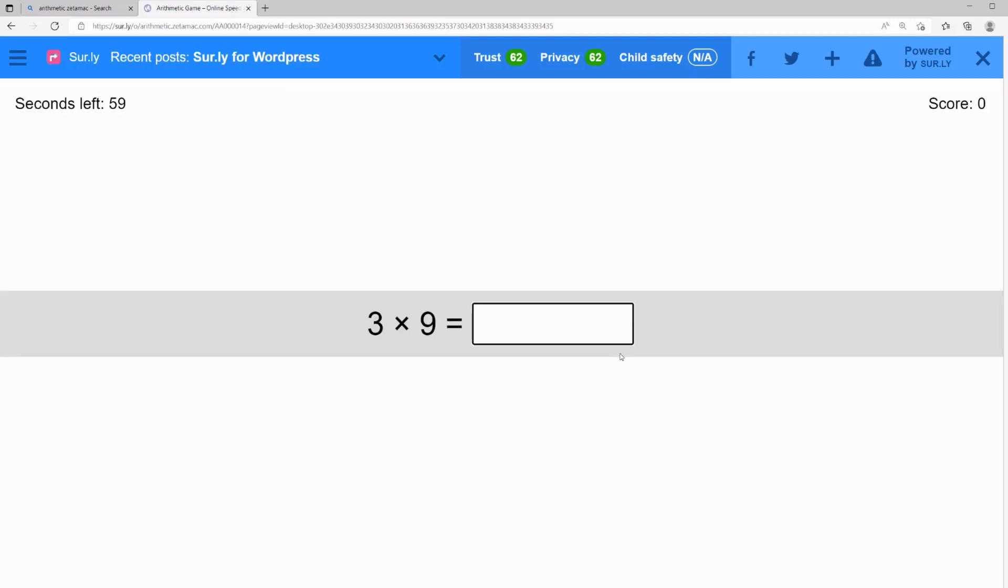What is 3 times 9? 27. 2 times 3? 6. 6 times 9? 54. 8 times 10? 80. 1 times 1? 1, etc. See if you can set a personal best.